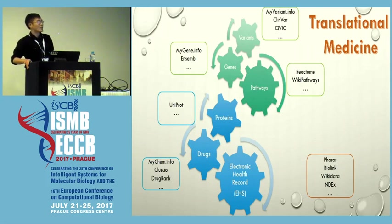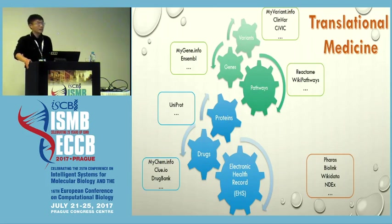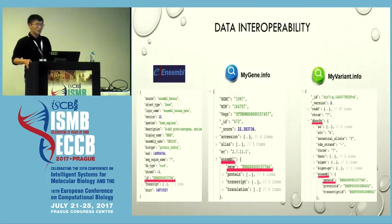Moreover, there are also a lot of community efforts such as mygene.info, myvariant.info, BioLink, or Pharos — they actually aggregate a large number of data and provide them via API on specific or multiple different biological concepts. BioThings Explorer utilizes JSON-LD, which is JSON for linked data, as well as the OpenAPI initiative, to link those APIs together to facilitate research like translational medicine.